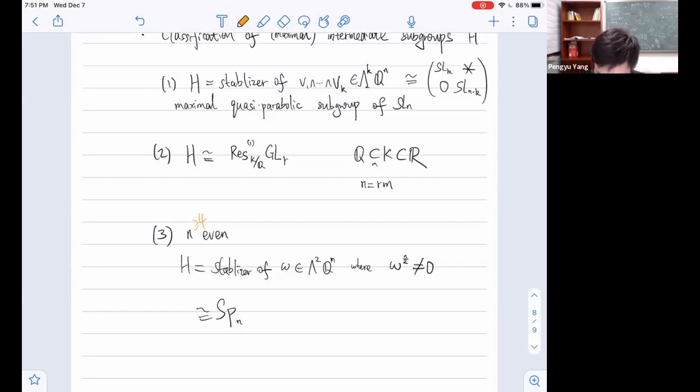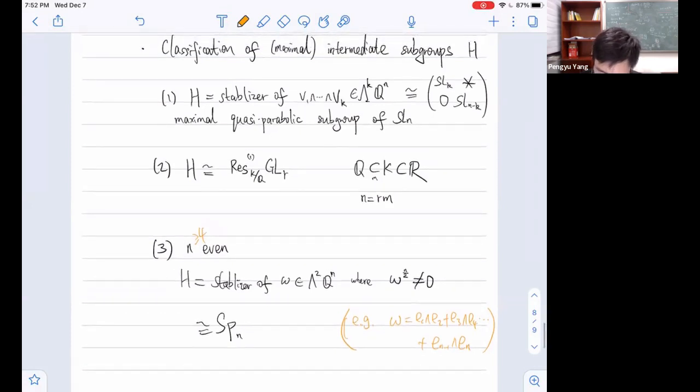Then you conjugate that by some elements in the Galois closure of K to make it another Q-group. So they give it a different Q-structure. This is another possible intermediate subgroup. This intermediate group H could be possibly the following. It is conjugated to some symplectic group. It is a stabilizer of some vector in the exterior square representation. We ask this omega to be full rank, meaning you take the n/2 smash power and it is not zero. For example, one can take this omega, then you get the standard symplectic group. You can take other rational vectors which are full rank.